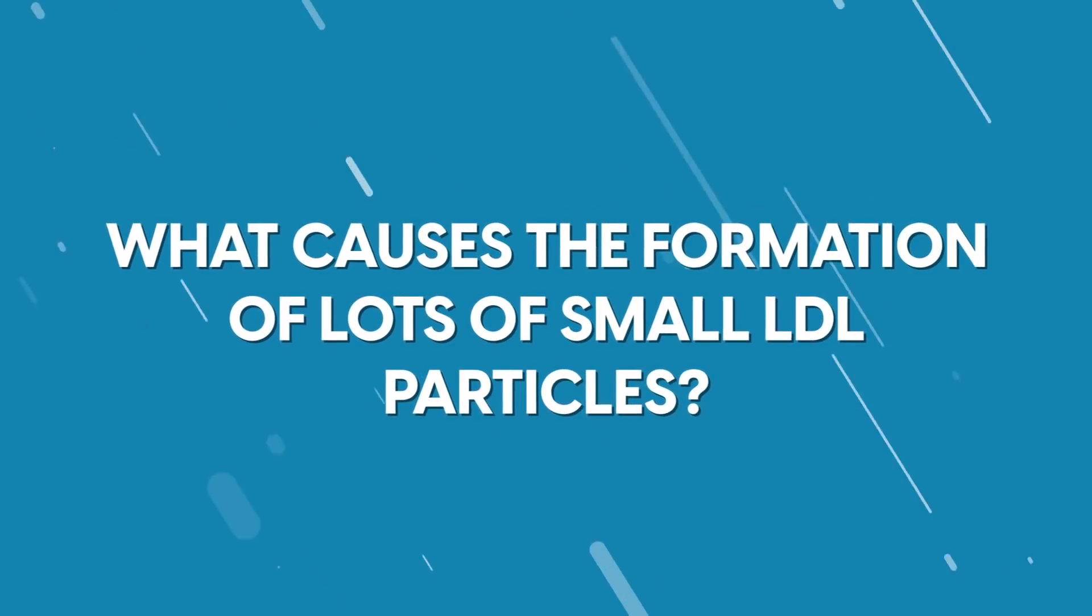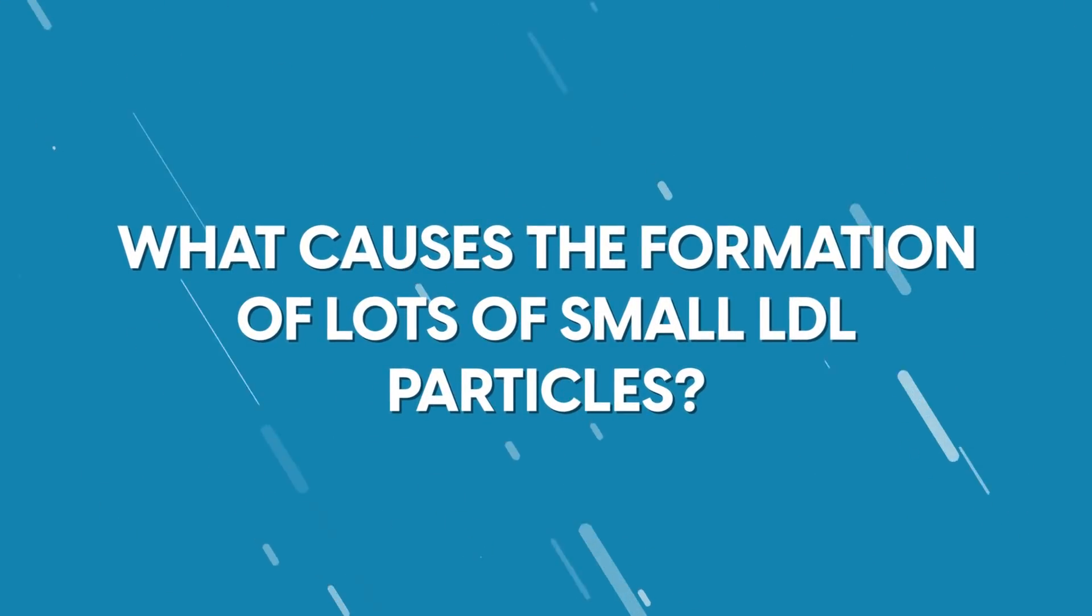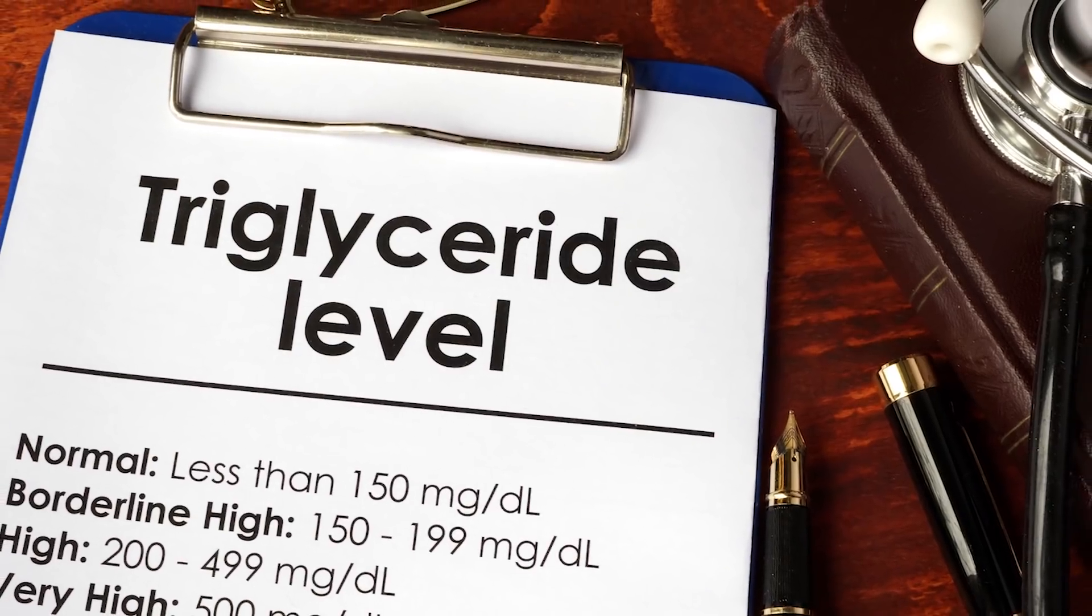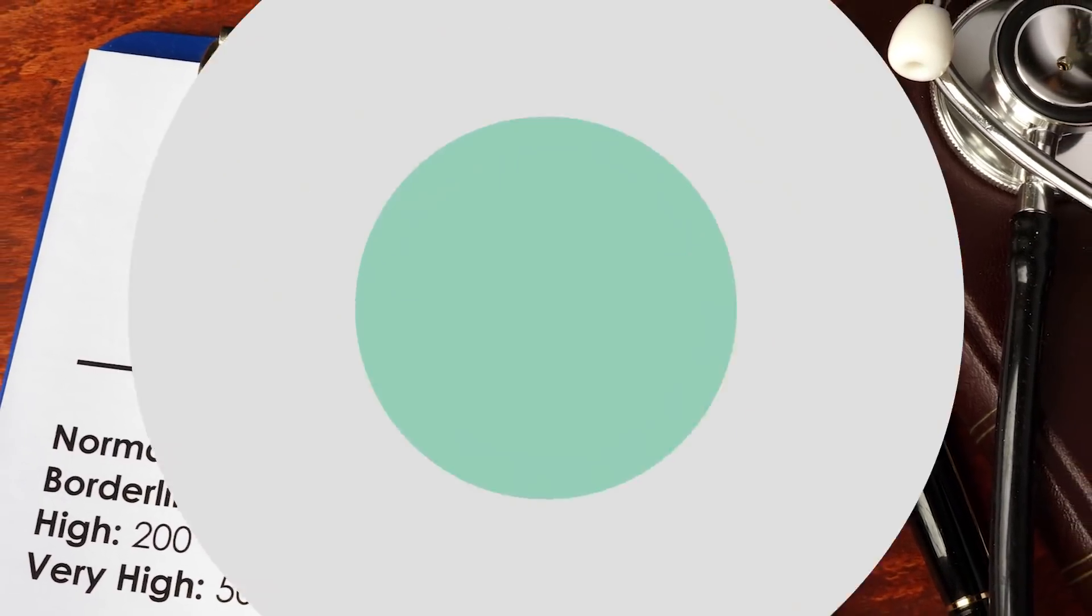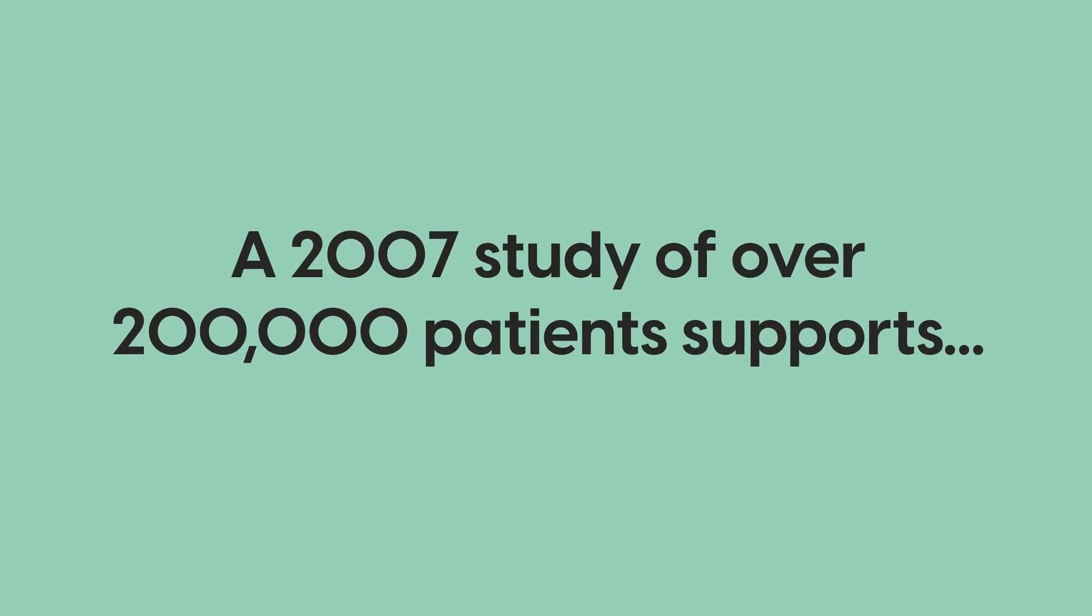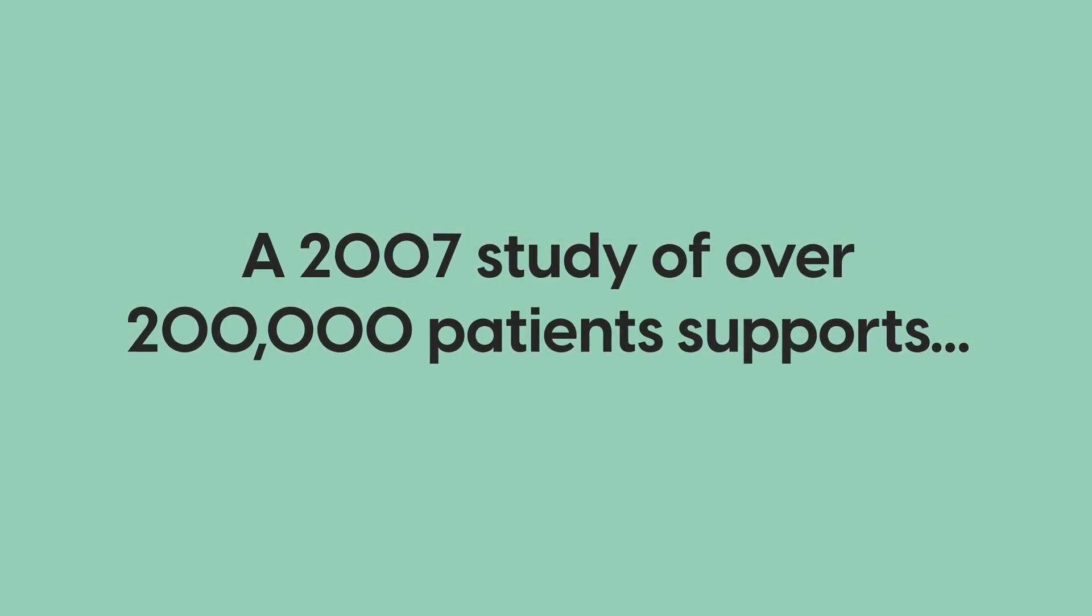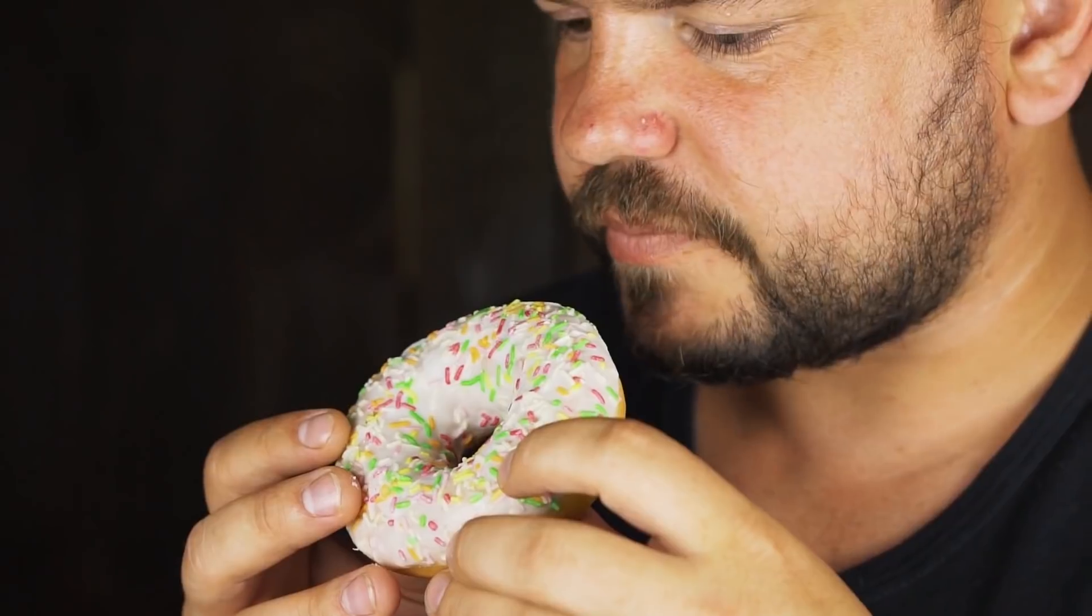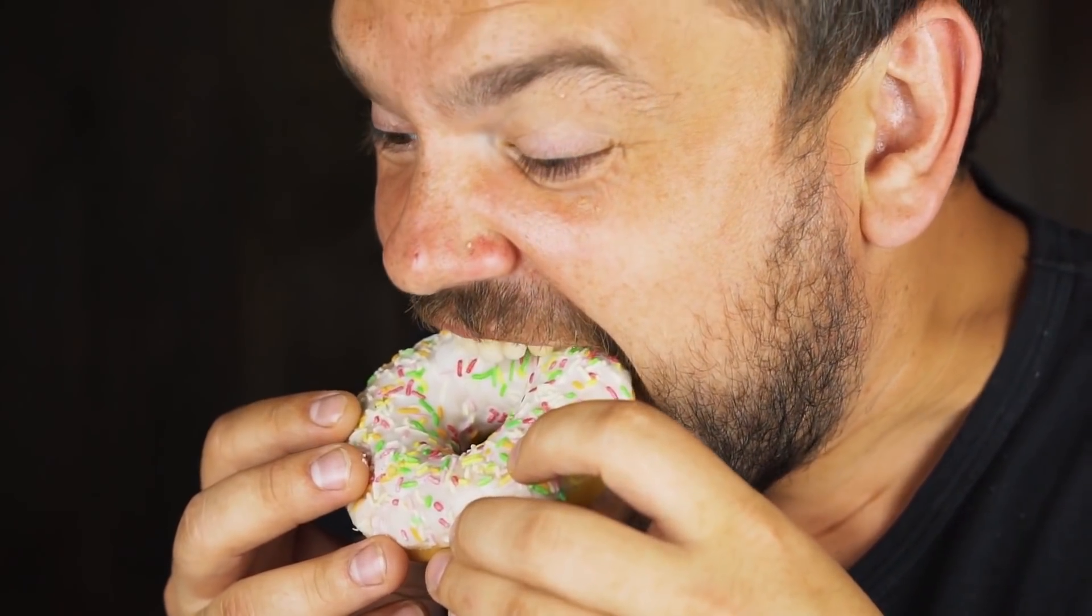So, what causes the formation of lots of small LDL particles? One way is having high triglycerides, which is a result of a carb and sugar rich diet. A 2007 study of over 200,000 patients supports this, stating triglycerides are an independent risk factor for coronary artery disease. High triglycerides are mainly caused by eating too much sugar and refined carbohydrates, especially grains.